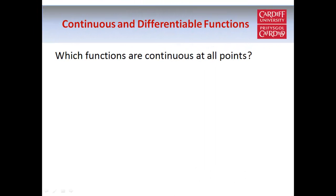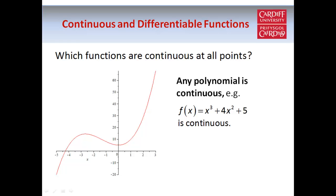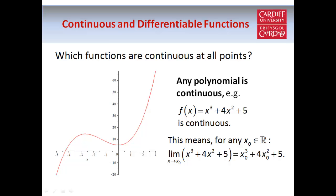Let's look at some examples of continuous functions. First of all, any polynomial function is continuous. So something like x³ + 4x² + 5 — a sum of powers of x with coefficients — can be proved to be continuous. So if you wanted to find the limit of x³ + 4x² + 5 as x approaches a point x₀, it's just going to be equal to x₀³ + 4x₀² + 5, applying the definition of continuity: the limit equals f(x₀).